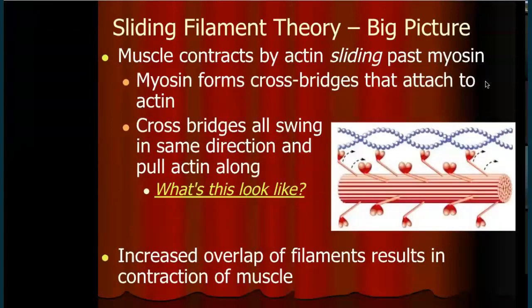A motor unit may include a handful of fibers or thousands of fibers — it depends on the nerve. The big idea of the sliding filament theory is that filaments slide — they move past one another. Thick filaments are called myosin; thin filaments are called actin. There are cross bridges on the myosin that bind to the actin and then pull, release, bind and pull, release — like oars.